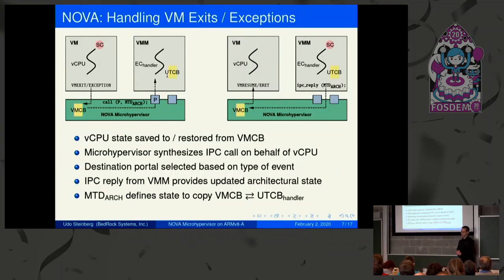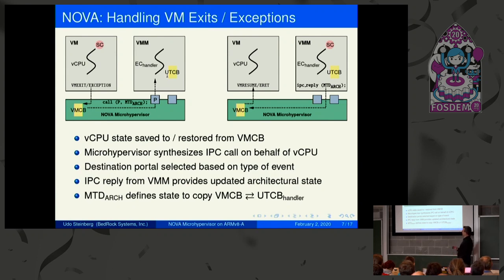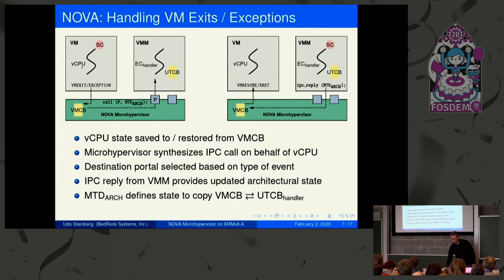Nova is a microhypervisor, so at some point we need to deal with virtual machines, virtual CPUs, and emulating instructions and devices. VMExit handling and emulation are layered exactly on top of IPC. We have two protection domains — the virtual machine, in which an execution context acts as a vCPU — and a VMM which provides the virtual machine service, with an execution context we call the handler.